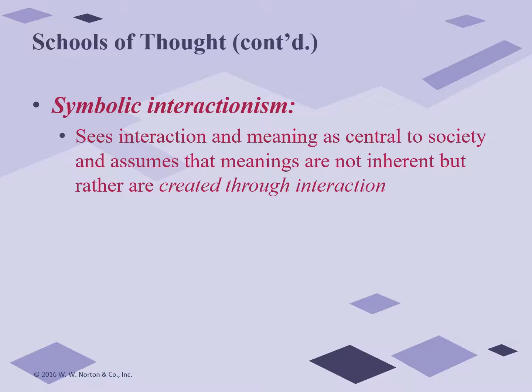Whether a tree is an obstacle or an oasis is not an intrinsic quality of the tree itself, but rather something people must determine — the same tree can mean one thing to one person and something else to another. Meanings can also be changed or modified through interaction; for example, a contractor who sees the tree as an obstacle might be persuaded to spare it by a neighbor. Although symbolic interaction focuses on how both self and society develop through interaction, it is useful in explaining a wide variety of social issues from inequalities of race and gender to the dynamics of families or coworkers.